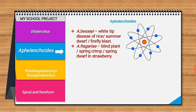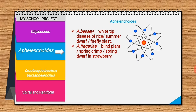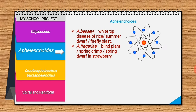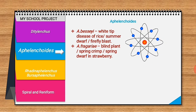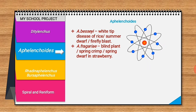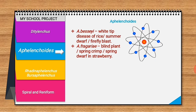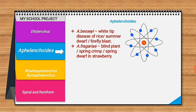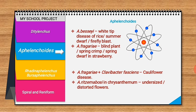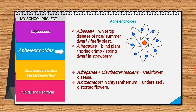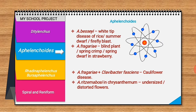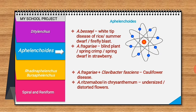Aphelenchoides besseyi causes white tip disease of rice, also known as summer dwarf and firefly blast. Aphelenchoides fragariae causes blind plant, summer crimp, and spring crimp in strawberry. Spring crimp is also called red plant, characterized by reddening of petiole, undersized leaves, and death of crown. Cauliflower doses occur due to a combination of A. fragariae and the bacterium Clavibacter fascians, producing a distorted flower-like bunch.